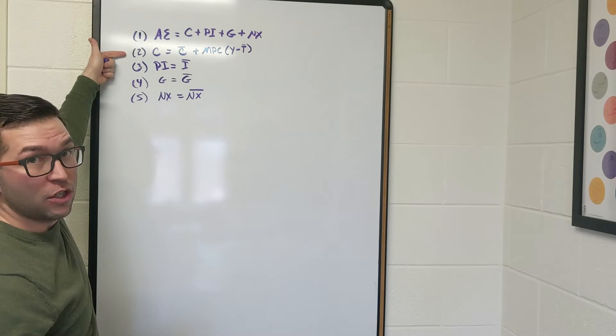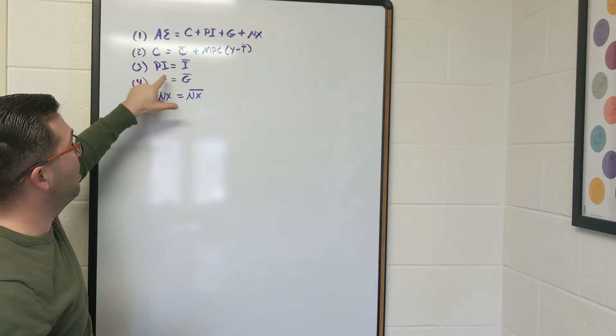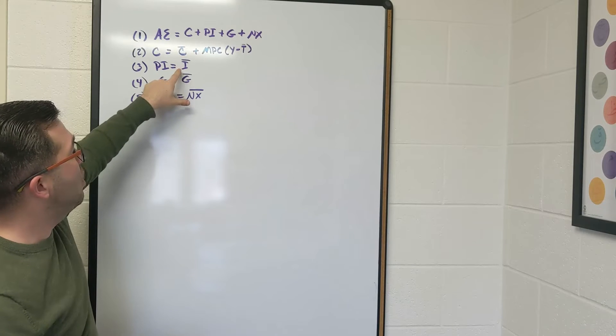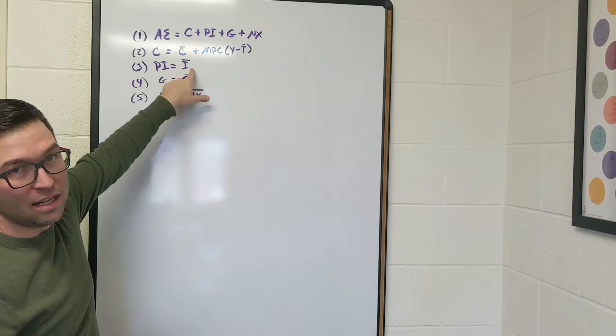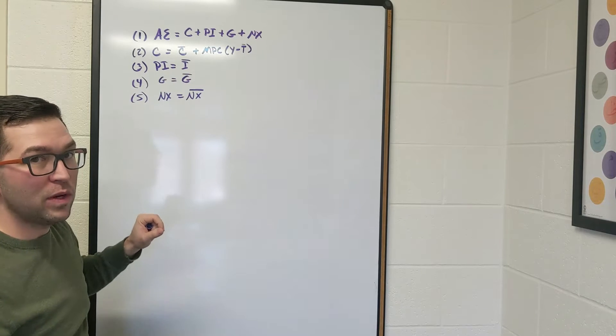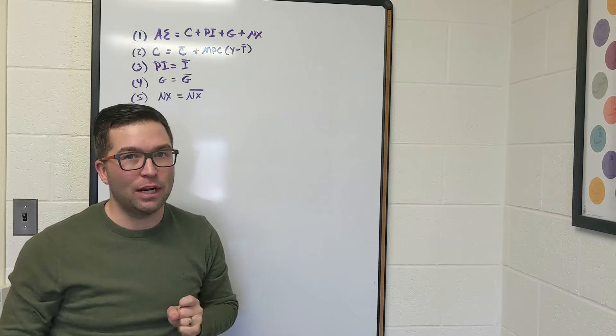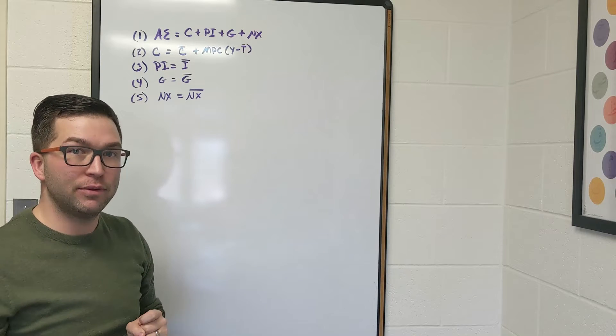I also have the consumption function, along with autonomous planned investment, government purchases, and net exports. Notice here how I just have I instead of planned investment, because we know that planned investment and investment are equal when we are in macroeconomic equilibrium. So we can drop a little bit of notation there.